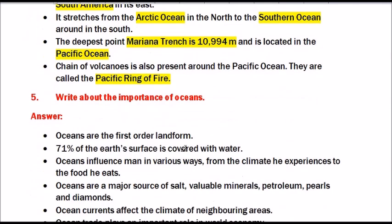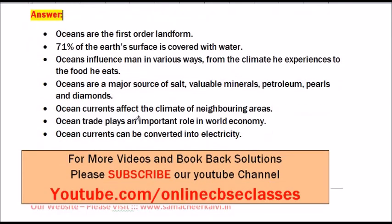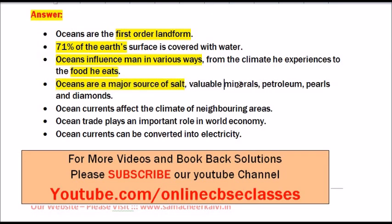Question number 5: Write about the importance of oceans. Oceans are first order landforms; 71% of the earth's surface is covered with water. Oceans influence man in various ways, from the climate he experiences to the food he eats. Oceans are a major source of salt, valuable minerals, petroleum, pearl and diamonds. Ocean currents affect the climate of neighboring areas. Ocean trade plays an important role in the world economy. Ocean currents can also be converted into electricity.